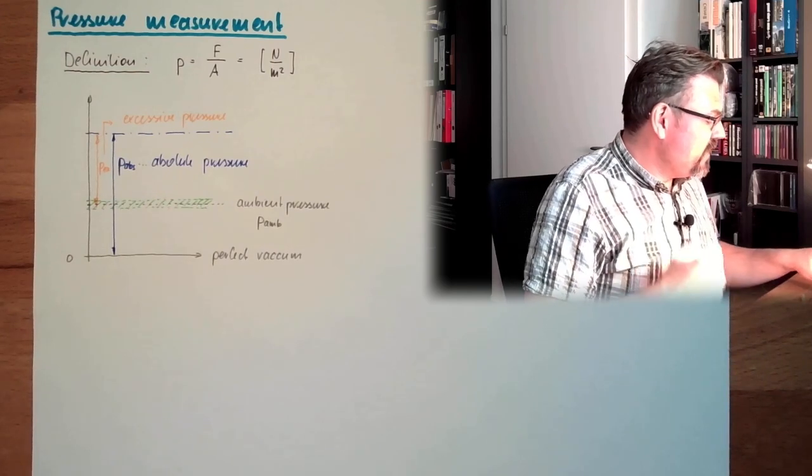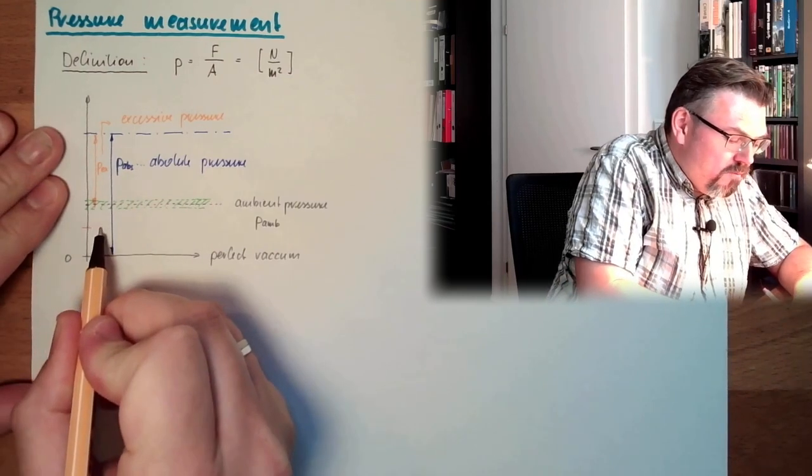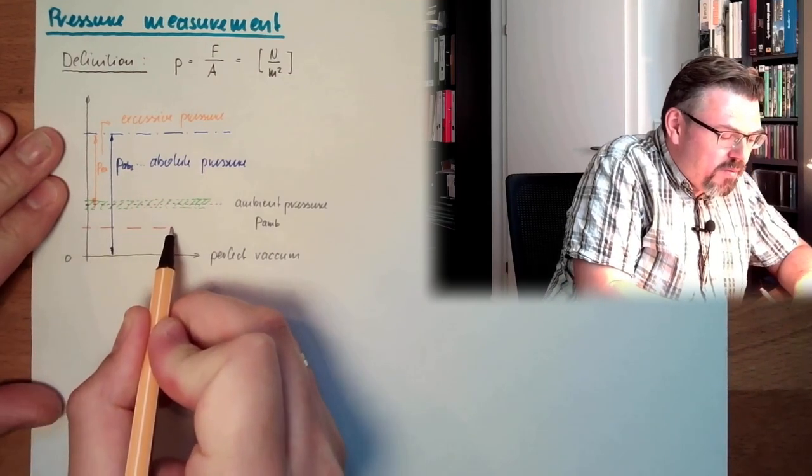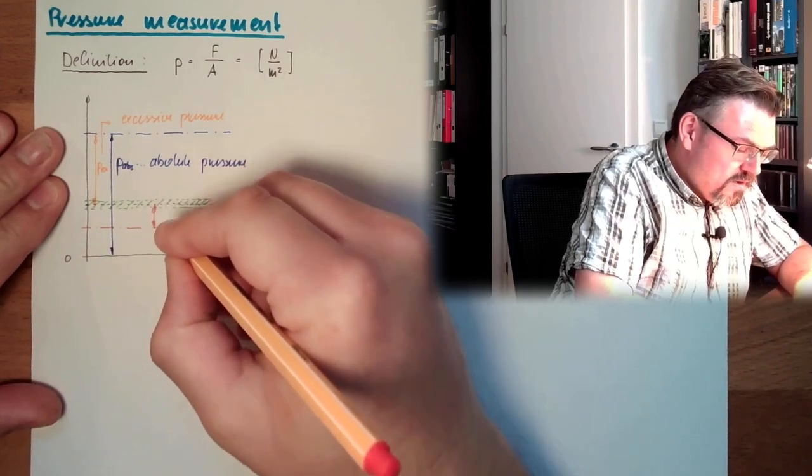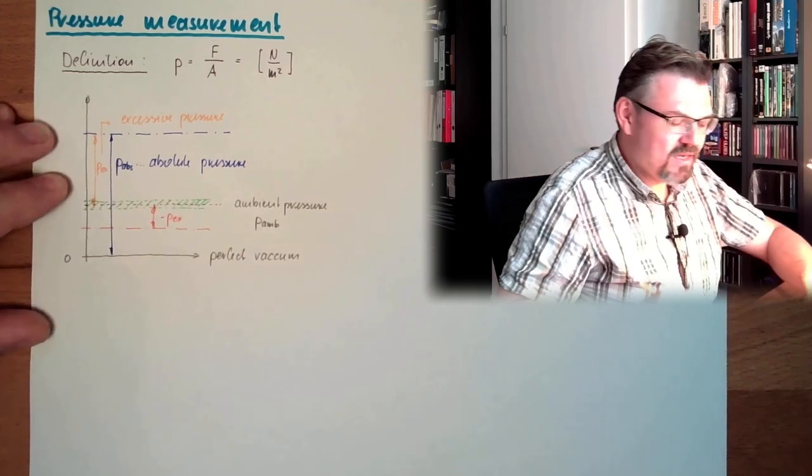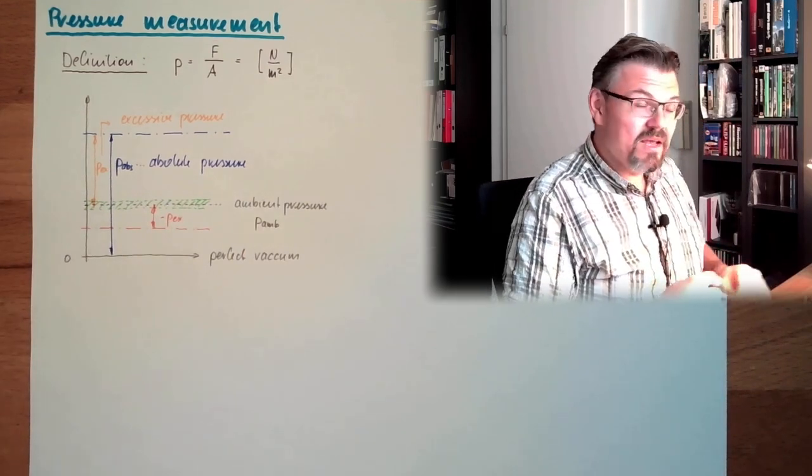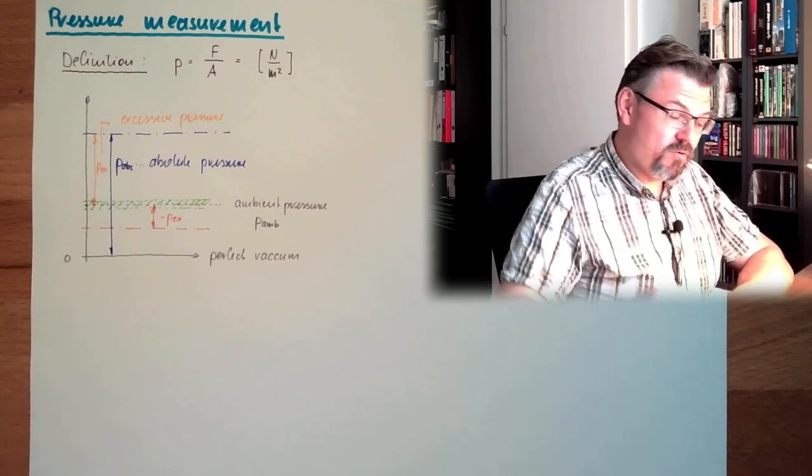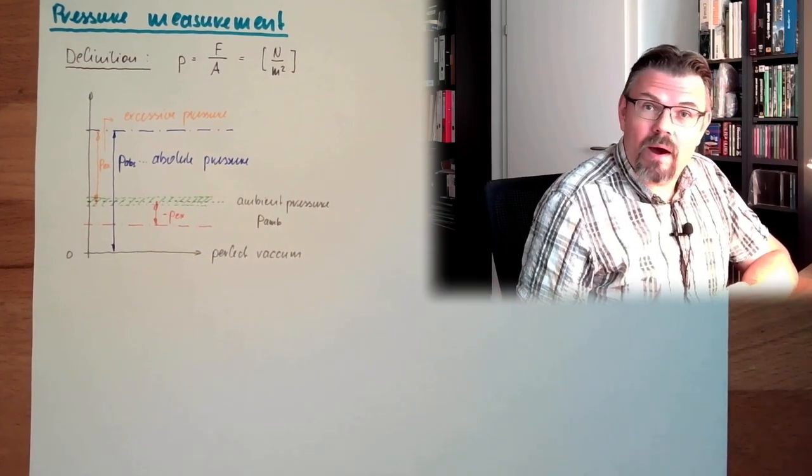This is why in some cases here, if we are below the ambient pressure, we have this negative Px. So the excessive pressure might be positive or negative. Whenever you see a scale where we see negative pressures, it will not go below minus 1.